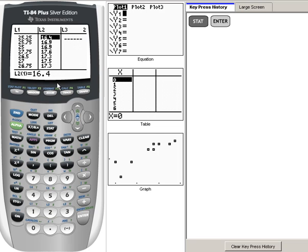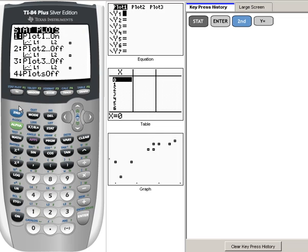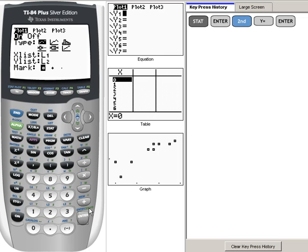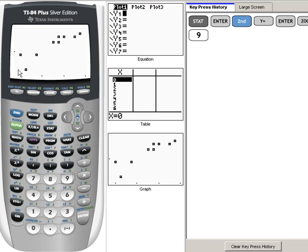Okay to graph the scatter diagram we're going to hit second and then y equals for stat plot. We're going to choose enter on number one. Make sure that our on is highlighted and then we're going to do zoom nine. And here is our scatter diagram.